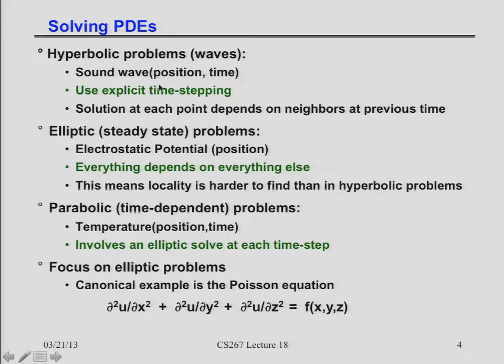The hyperbolic systems are the easiest to map to structured grids, because all these waves move at a finite speed — the speed of sound, the speed of light. You set up your structured grid, and at every time step every grid point has to average with its nearest neighbors. That's the most natural thing you can do in a grid; it's explicit time stepping and very straightforward. Elliptic is the hard case — that's solving Poisson's equation, because everybody depends on everybody. And parabolic is time dependent, but at every time step you have to solve an elliptic problem. I'm going to focus on the elliptic case.